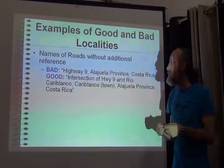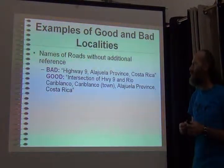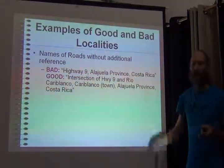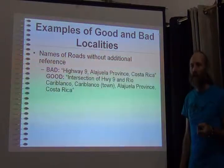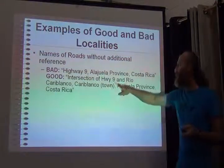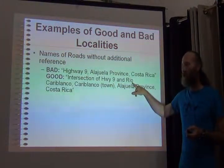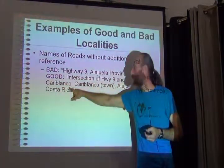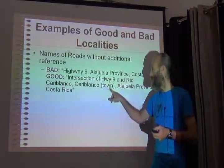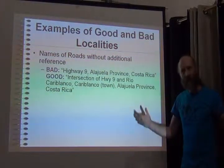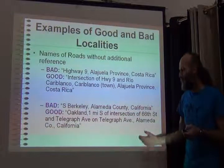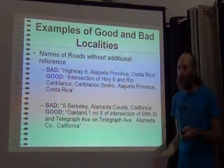Another good practice: don't use road names without additional reference. If you just say 'Highway 9 in this province,' that's a very long distance. Instead, say 'the intersection of Highway 9 with Rio Carre Blanco river, in the town of Carre Blanco, in this province in Costa Rica.' Being specific narrows the extent. All of these examples come down to the same principle: be more specific.